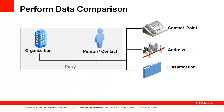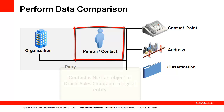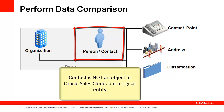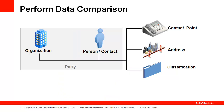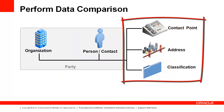This example of the Trading Community Architecture Party Model illustrates the need to understand the structure of the application so you know how to import data. You likely have contacts in your data. Contact is not an object in Oracle Sales Cloud, but a logical entity representing a person associated to an organization. Contact point, address, and classification are not fields on the contact record in the user interface. This information is held as separate records in different tables so that it can be associated to different entities.